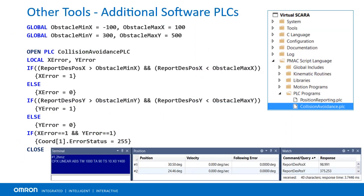Additional PLCs can be written for purposes such as collision avoidance. The PLC can abort motion on its own or set a flag for kinematics.